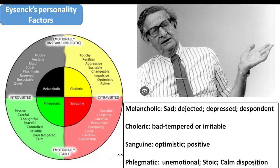The last quadrant - emotional instability and introverted - describes a person who could be moody, anxious, rigid, sober, pessimistic, reserved, unsociable, and quiet. Eysenck attributes the word melancholic to all these traits, meaning sad, dejected, depressed, and despondent, but not expressive because the individual is introverted. So that is how Eysenck looks at personality broadly based on emotional stability and extroversion tendency, classifying personality into four types: melancholic, choleric, sanguine, and phlegmatic, placed on four quadrants of the x and y axes.